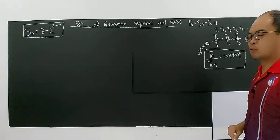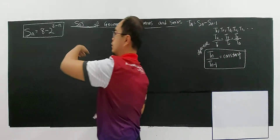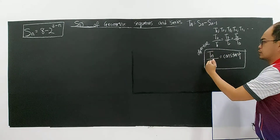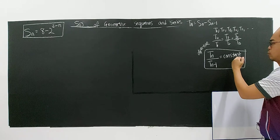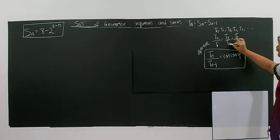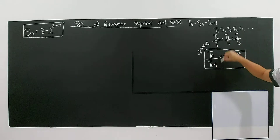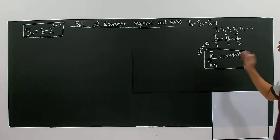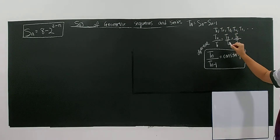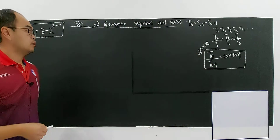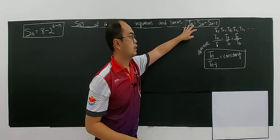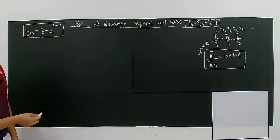Your objective for this question is to prove that TN divided by TN-1 is a constant. Once you show that this ratio is constant, you have shown it is a geometric sequence, because only a geometric sequence gives the same value when you divide consecutive terms — that is the common ratio. First, apply the formula TN equals SN minus SN-1, and refer to the previous video on how to derive this.